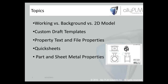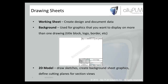First, we'll go over what working sheets, background sheets, and 2D model sheets are. A working sheet is where you create your design and document data — you can apply a scale and attach background sheets to it. Background sheets are used for graphics that you want to display on more than one drawing, such as a border, title block, logo, and watermark. A 2D model sheet is where you can draw sketches, create background sheet graphics, define cutting planes for section views, do strictly 2D modeling, and bring in AutoCAD files.